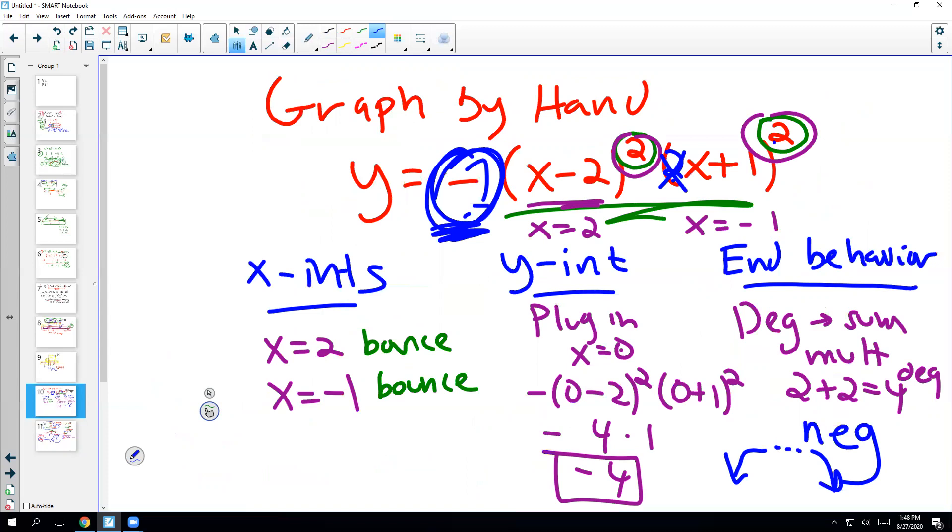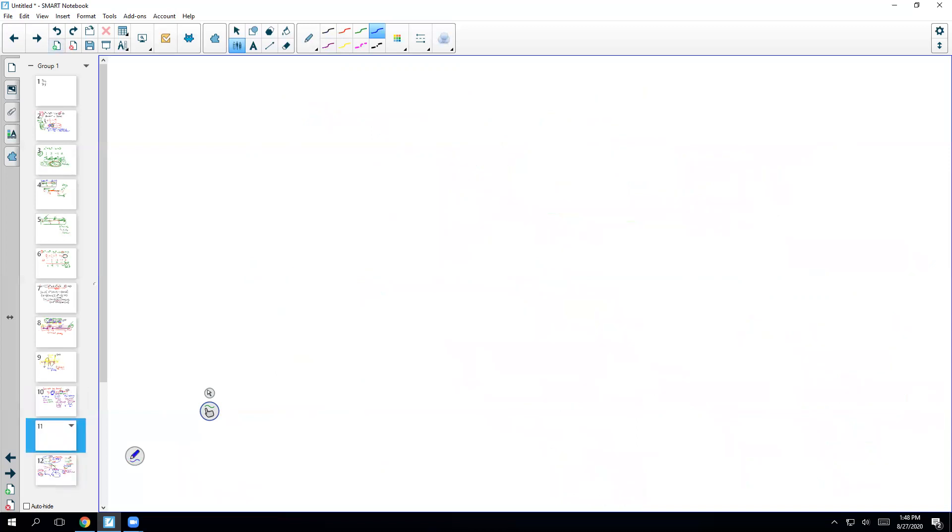Okay, now we're ready to graph. These are all the clues that you need in order to graph this polynomial. So let's just try to keep all this in mind. We have x-intercepts at negative 1 and 2, both bounces. Y-intercept at negative 4. And this is our end behavior.